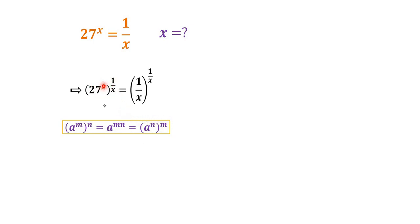So look here the power x and the power 1 over x. So these can be cancelled and we have 27 is equal to 1 over x to the power of 1 over x.